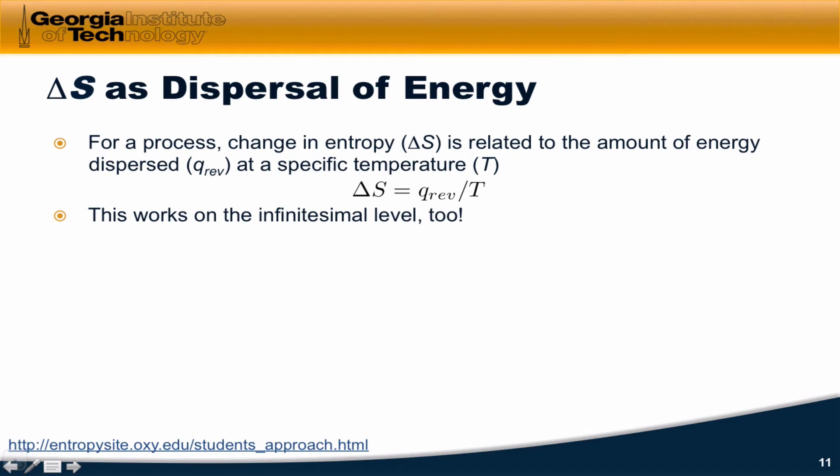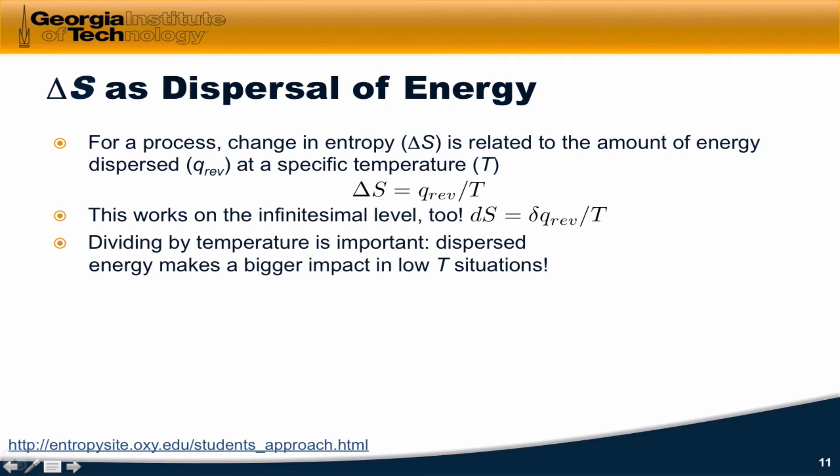And I would be remiss if I didn't mention the infinitesimal level, which we saw in the video series on the first law. This also holds at the infinitesimal level. So a very tiny change in entropy is equal to a tiny reversible heat divided by the temperature at which that reversible heat transfer occurs. And dividing by the temperature is important when thinking about entropy, because dispersed energy makes a bigger impact in low temperature situations.